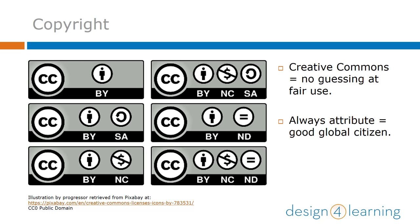It's generally a good practice to have attribution for any images you use that are not your own, even if they're in the public domain. It comes down to being a good education citizen. Not only are you giving credit where credit is due, but you're providing a way for others to find images you used if they think they might also be able to use them. As long as you minimally provide the name of the creator, the site you retrieved it from, and the link, there's no wrong way to cite an image in your multimedia content.